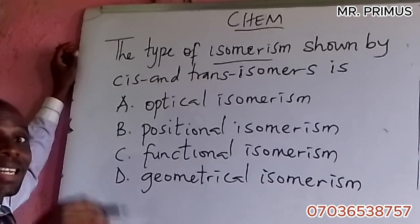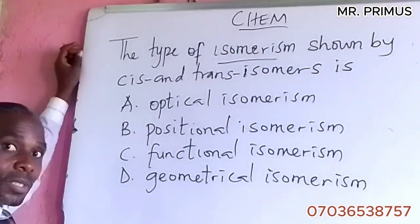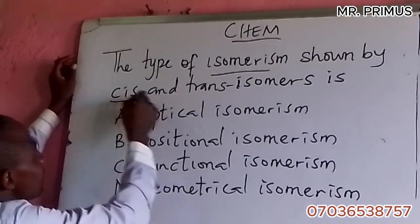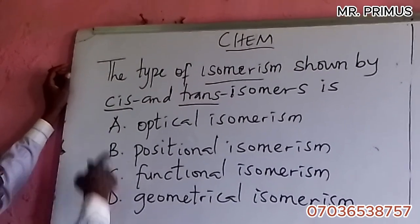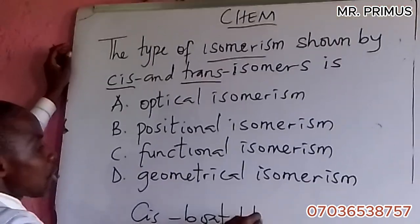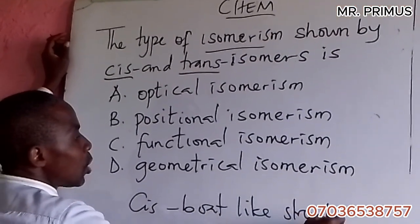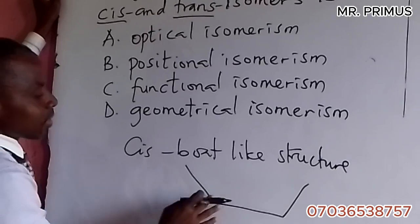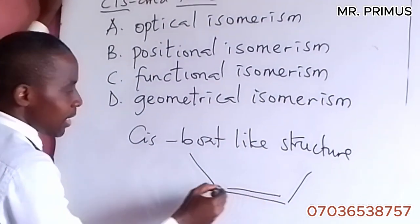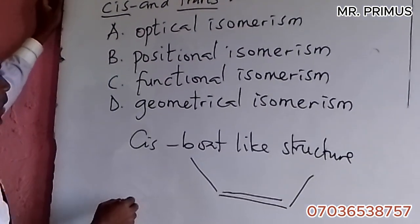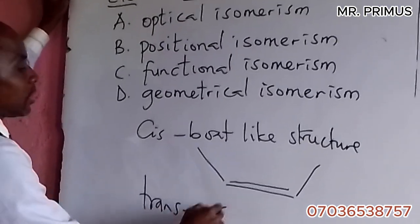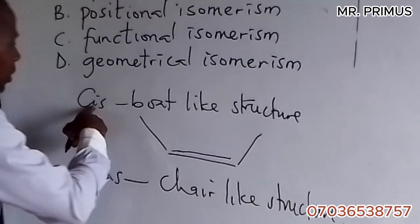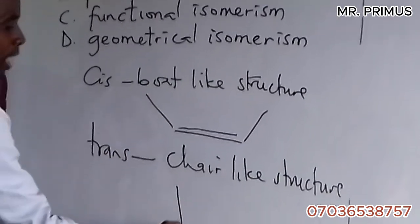Let's look at cis and trans isomerism. Cis isomerism has a boot-like structure - it's like a boot, like this with a double bond. Trans is chair-like structure. This is how trans is structured.